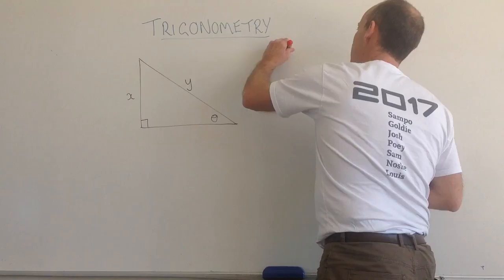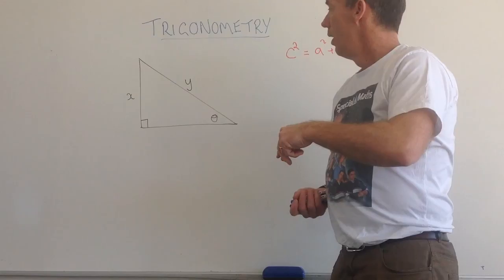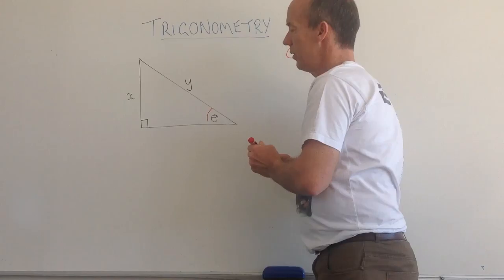So earlier in the year we looked at Pythagoras' Theorem where we said C squared equals A squared plus B squared, and that works for any three sides in a right angle triangle.